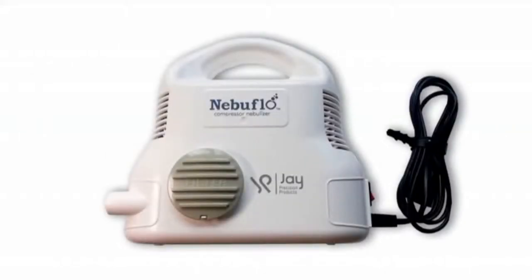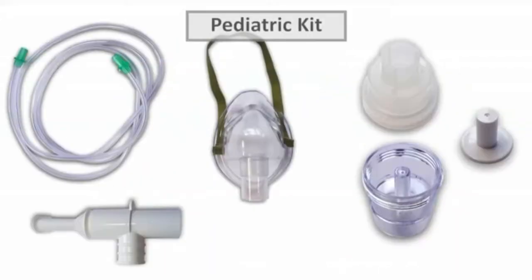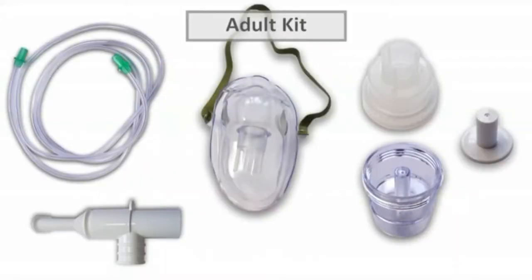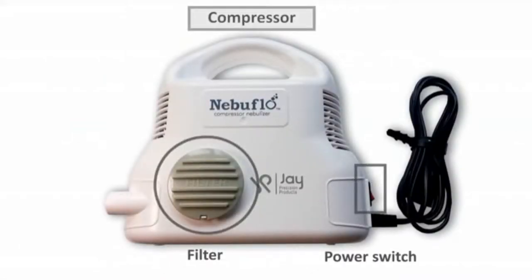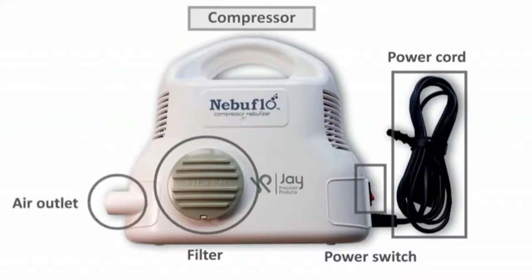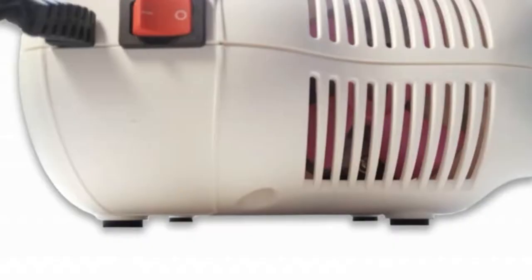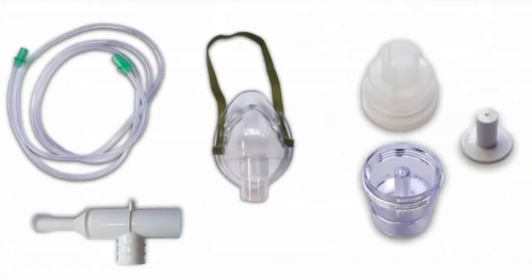The nebulizer consists of a compressor and two separate kits: a pediatric kit and an adult kit. The compressor consists of a filter, power switch, power cord, air outlet, air opening, and rubber pads. The pediatric kit contains a child mask, mouthpiece, cap, baffle, medication chamber, and